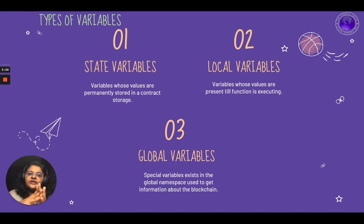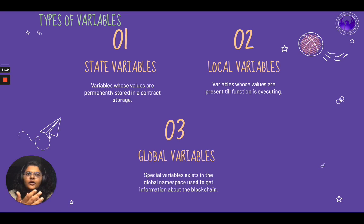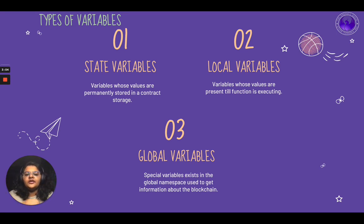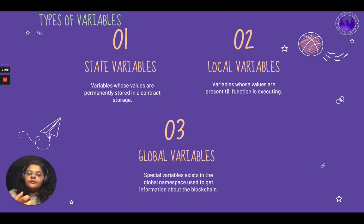The third type of variable, and something slightly different and interesting in Solidity, are global variables. Global variables in Solidity don't have the same connotation as in other programming languages. Here, global variables are special variables which have their own names and are used to get information from the blockchain, which exists in the global namespace. Some popular global variables are message.value, message.sender, and block.timestamp, which we often use in smart contracts.